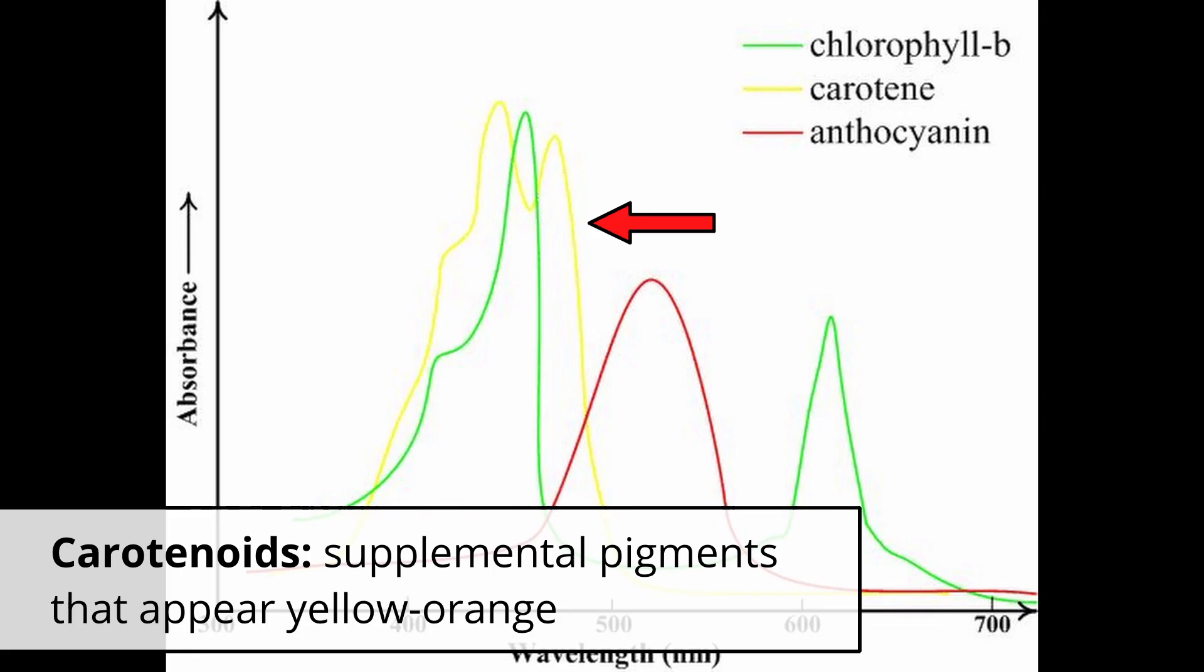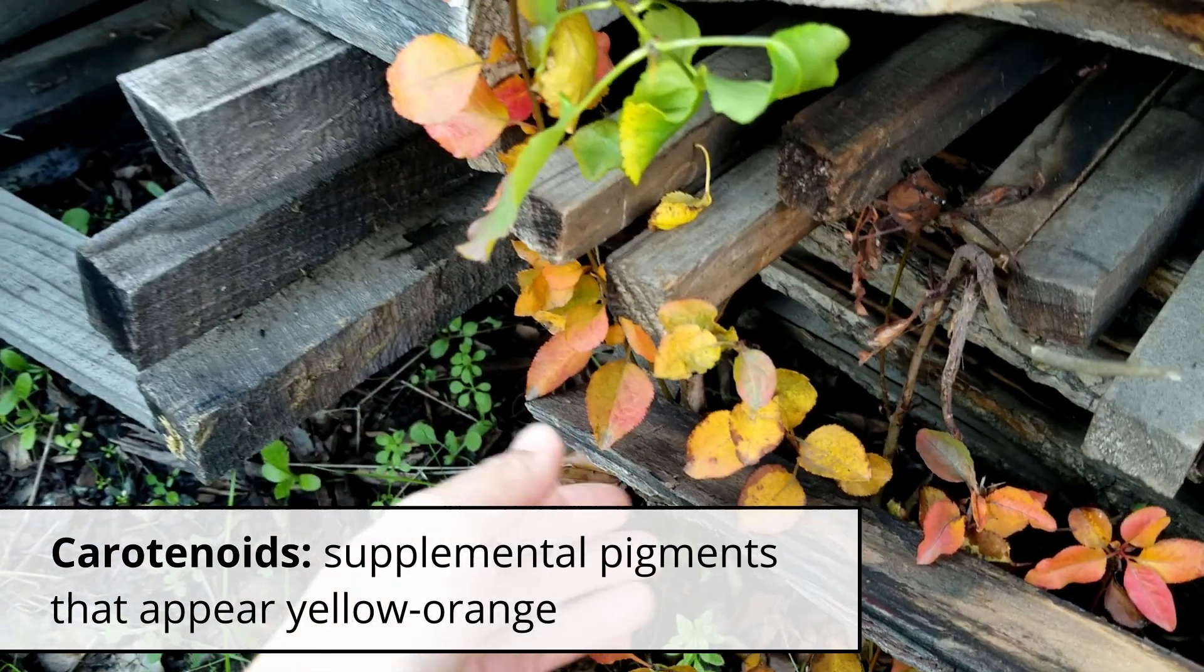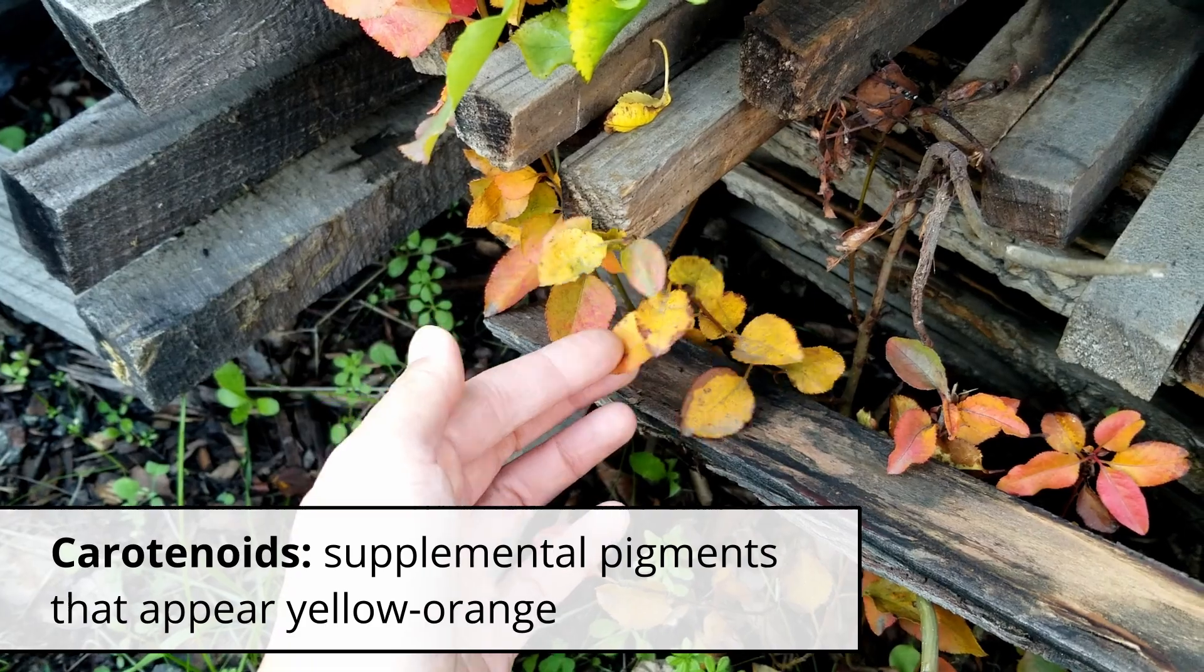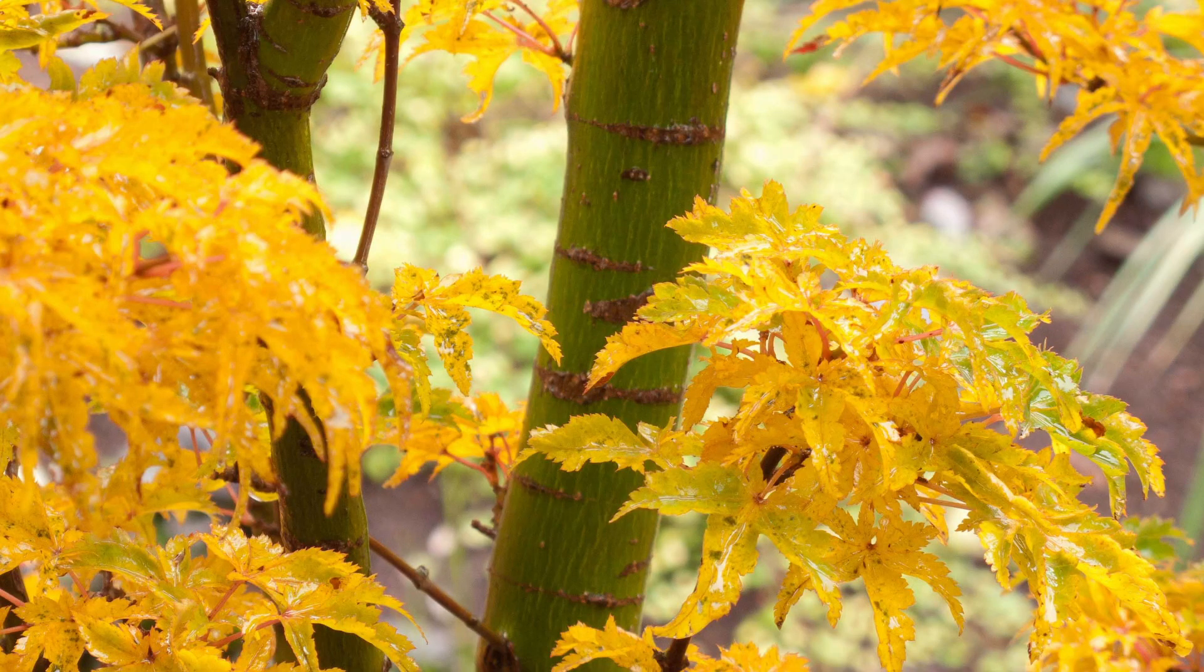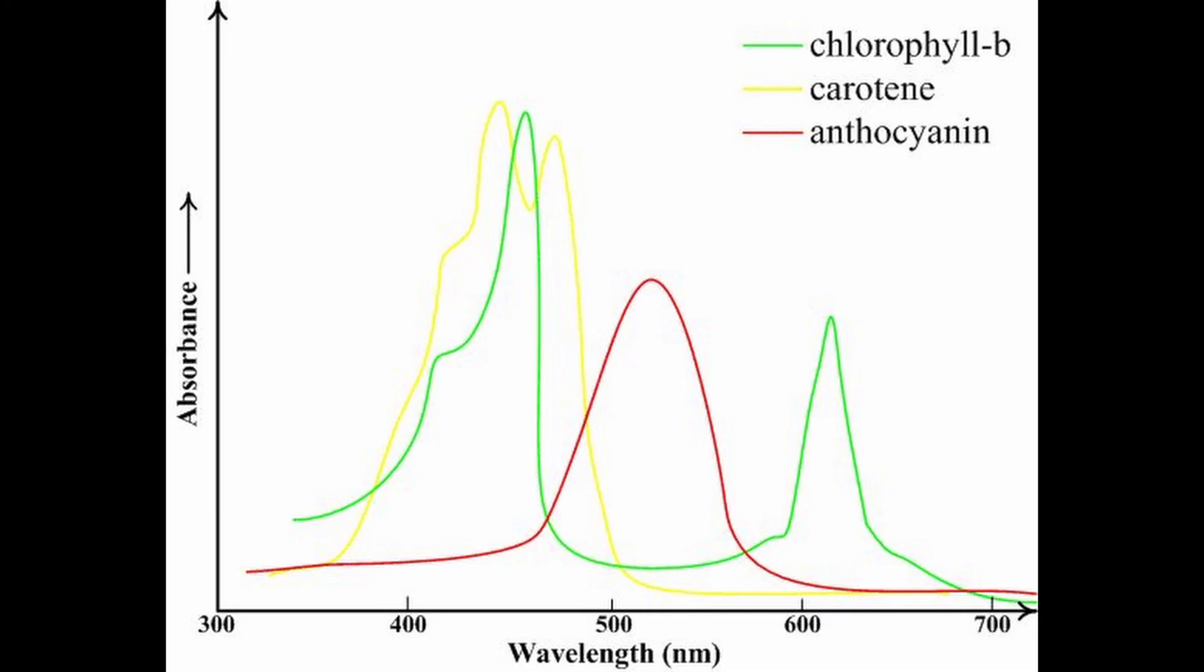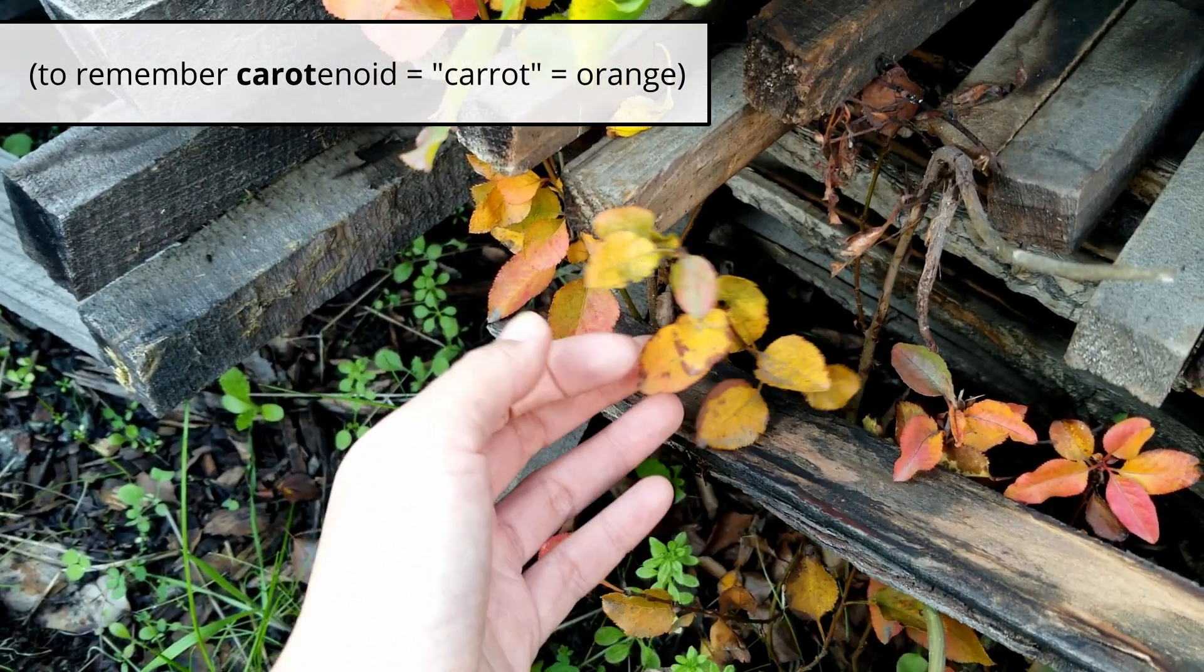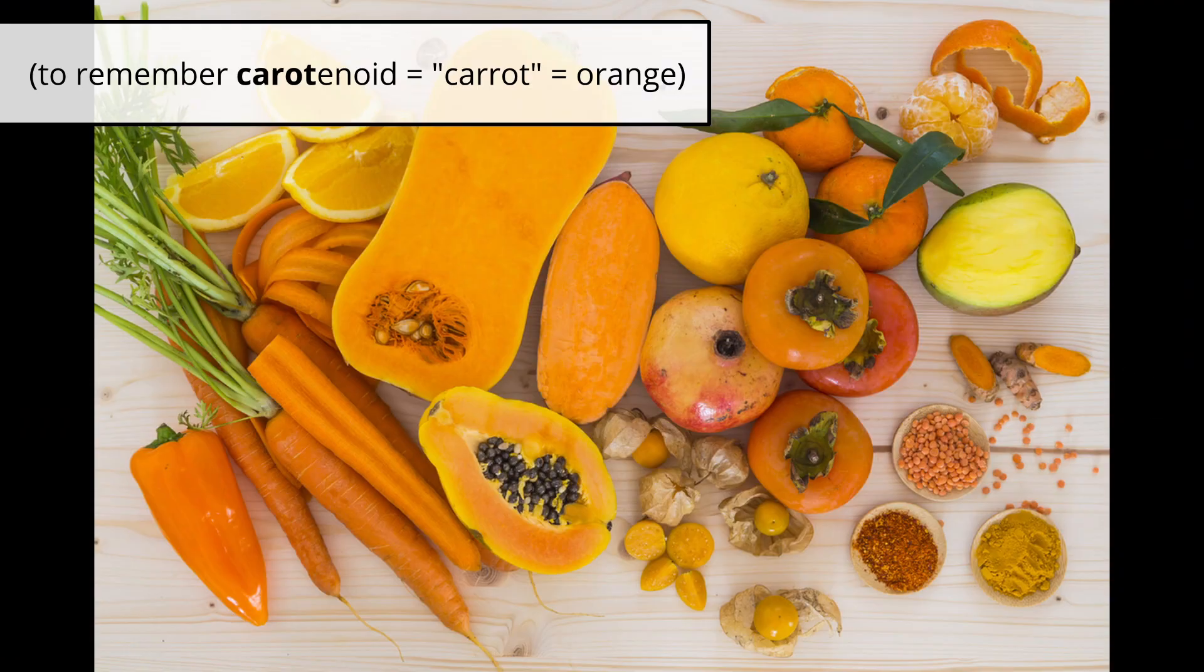There's two other groups of supplemental pigments. The first is called carotenoids and these look orange because they absorb everything but orange light. Carotenoids help with absorbing light for photosynthesis and you can remember the name because the start of it looks like carrot.